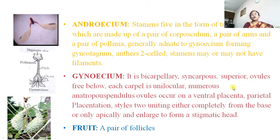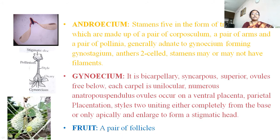Gynoecium: bicarpellary, syncarpous, ovary superior, ovules free; the two ovaries are free. Both carpels are united from the style and the stigma is combined and pentangular. Styles two, united either completely or at the base, or only apically, and fused to form the stigmatic head. Fruit is a pair of follicles — since there are two separate ovaries, two separate fruits are formed.